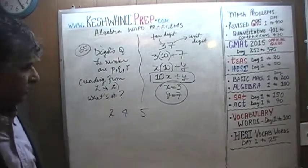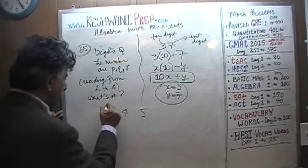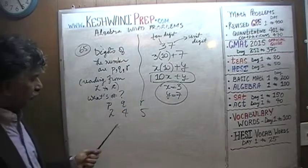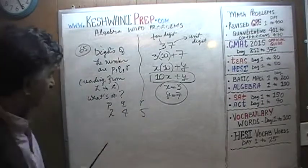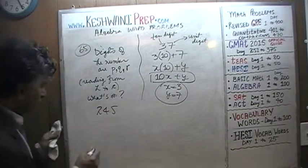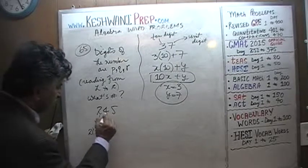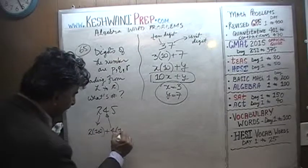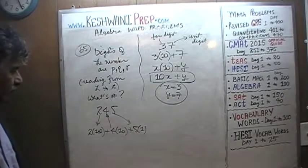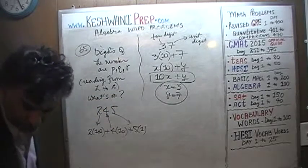So here, P is equal to 2. In this example, P happens to be 2, Q happens to be 4, and R happens to be 5. But the question is how do I represent 245? 245 — this 2 tells us how many hundreds we have: two one-hundreds. This tells us how many tens we have: four tens. And this tells us how many ones we have: five ones. That's why it's called the units digit, tens digit, and hundreds digit.